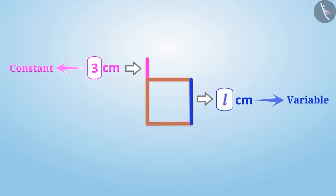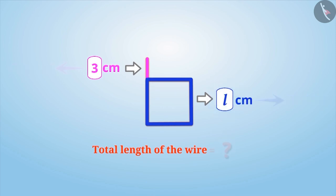If we express the side of the square by L, then will you be able to get the total length of the wire in the form of a variable? Here, the length of one side of the square is L, so the length of the four sides will be 4 times L, that is 4L.